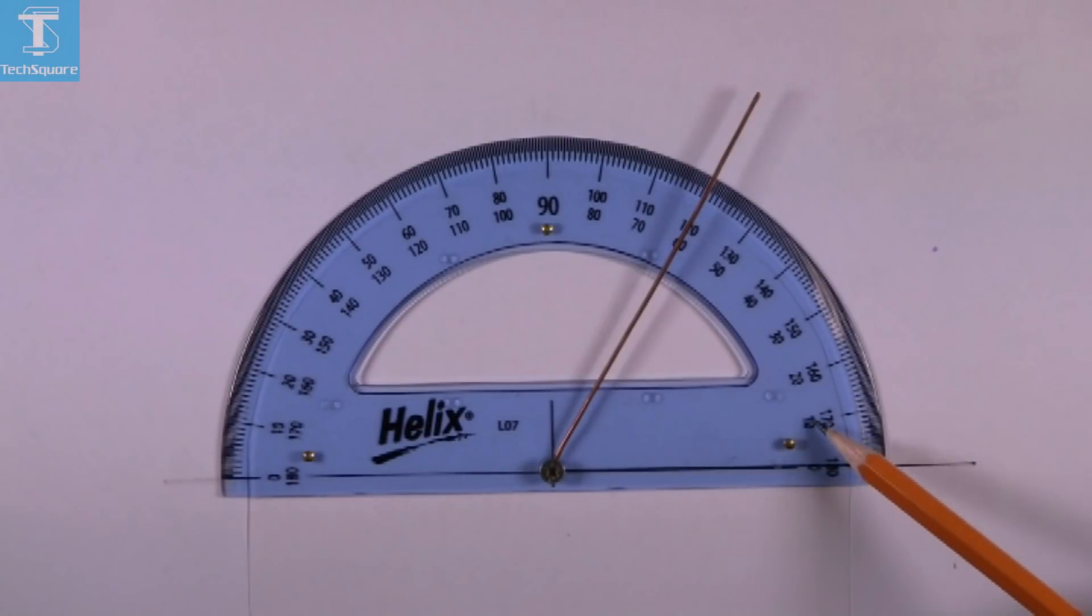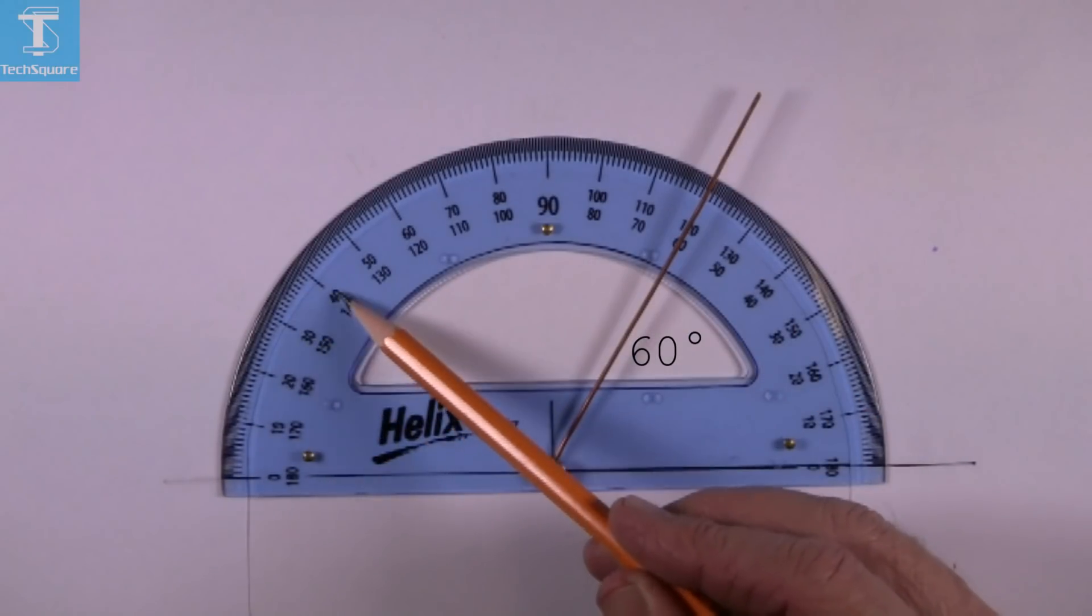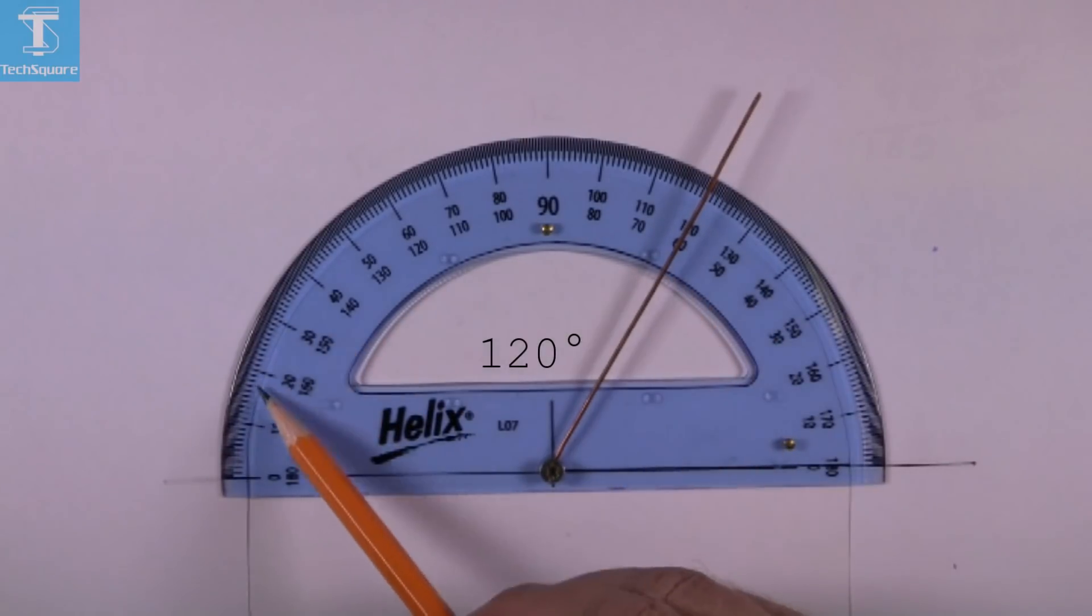When I move it up to this position here, the angle between these two lines is 60 degrees, and then on this side it's 120 degrees. So it's 60 degrees here and 120 degrees here.